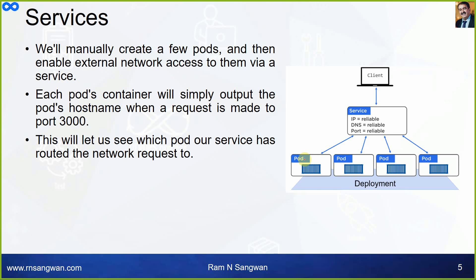We will manually create a few pods and then enable external network access to them via a service. The client sends the request to the service; the service handles it. The IP is reliable — DNS and port. I'm also working on a lab to access a pod through a domain name using a DNS server. I'm trying to register a domain and host a website inside a pod on OCI cloud, accessible through a domain name. That networking part will be covered theoretically tomorrow.